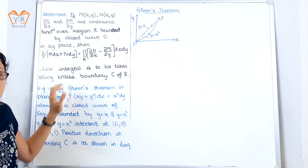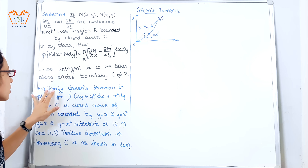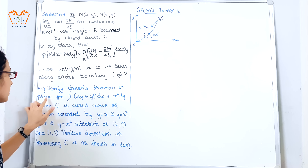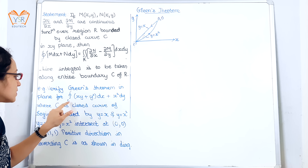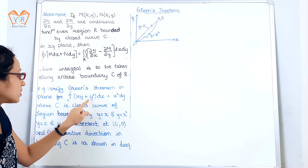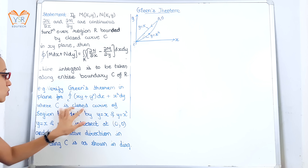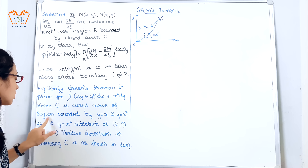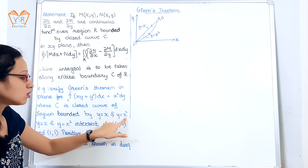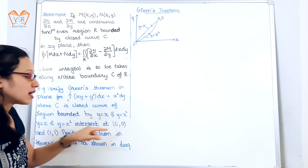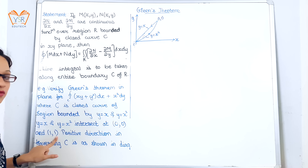We'll understand this statement through one example. Verify Green's theorem in the plane for the closed line integral over closed curve C of (xy + y²) dx + x² dy, where C is the closed curve of the region bounded by y = x and y = x², and the intersection points of these two curves are (0,0) and (1,1).